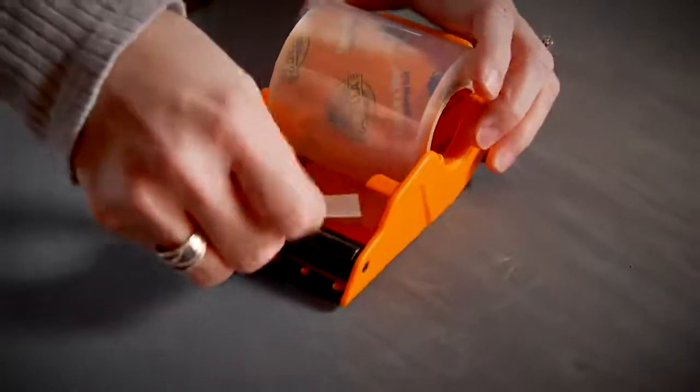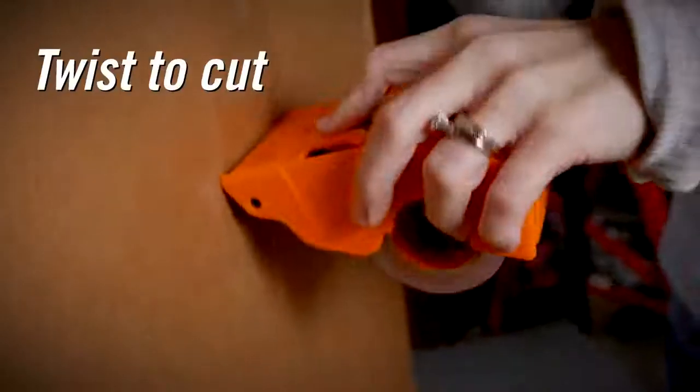First, pull the tape through the tabs, then hold the side grips while taping the seams of the box, and twist to cut.